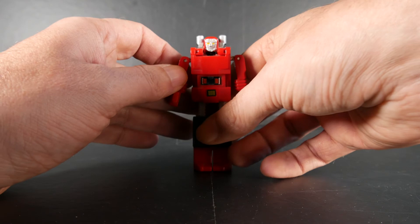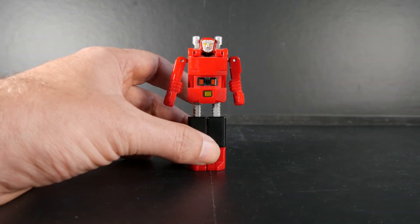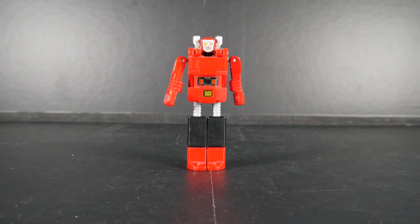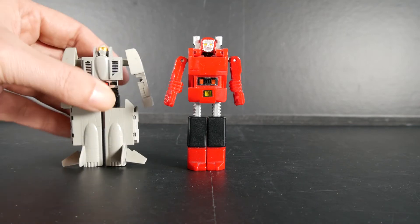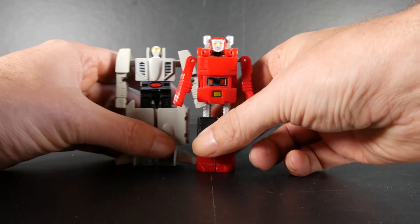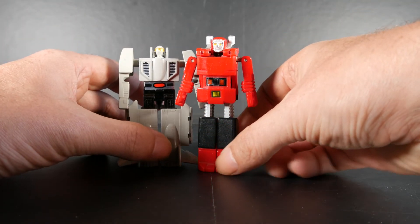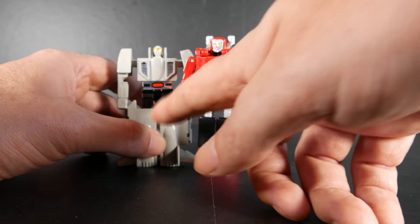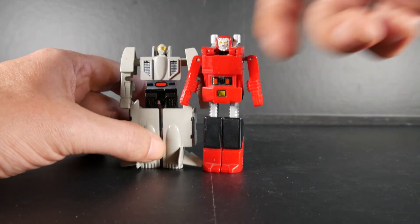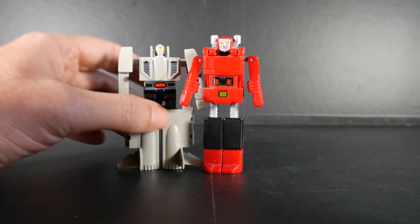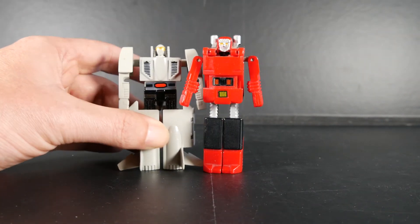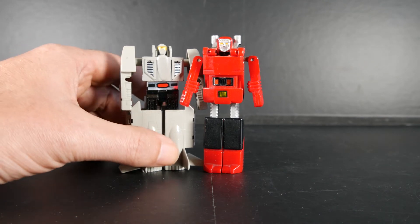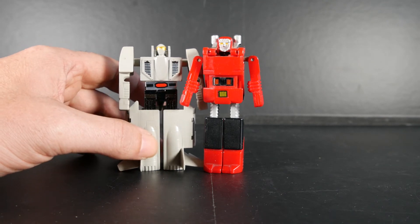Et voilà donc notre petit scooter en mode robot. Alors comme je l'ai dit, c'est censé être le plus petit de la bande. Alors je vais faire rapidement un comparatif avec Leader. Dans le dessin animé il est censé lui arriver à peu près au niveau de la taille. Il fait carrément une tête de plus. Comme quoi, les proportions dans les gobos, c'est vraiment tout sauf respecter.